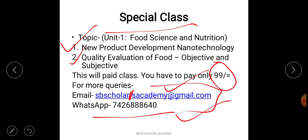This mail ID is in the description box. You can email us at sbscholarsacademy@gmail.com. If you are interested in both two topics which is under unit one, Food Science and Nutrition, you can contact us our mail ID or our WhatsApp number. We will tell you the further details of the payment and all. This class is totally online mode.